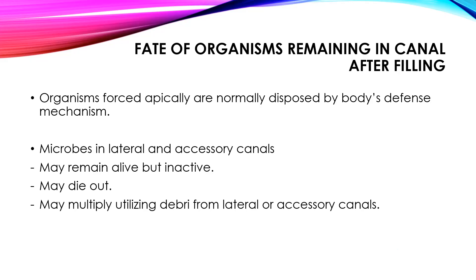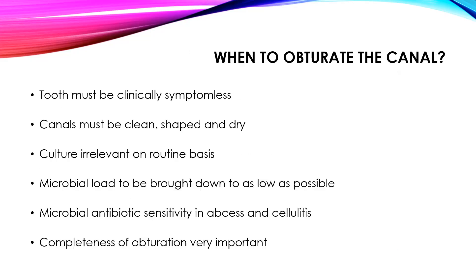This reinfection will typically happen when the root canal has not been instrumented and cleaned properly. The criteria for obturation are: the patient should be asymptomatic — the tooth must be clinically symptomless; the canal must be clean, shaped, and dry, meaning we must have done proper cleaning and shaping; and when removing the dressing, the canal should be dry without any exudate or blood. On a routine basis, it is not necessary to take a culture, but only in severe abscess cases which are not resolving. With our cleaning and shaping methods, we should aim to bring the microbial load as low as possible to prevent future infections.